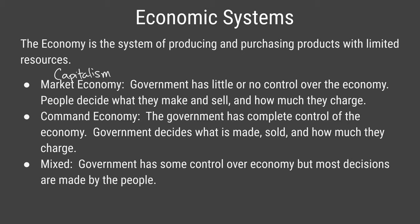In a command economy, the government has complete control — deciding what is made, what can be sold, and at what price. Another name for a command economy is socialism, also known as communism. Most economies, including the United States, are mixed economies, where individuals have most of the decisional power over what they make and sell, but the government also has some regulation. One area the US government strictly controls is monopolies, preventing any single company from having complete control over a product everyone needs.